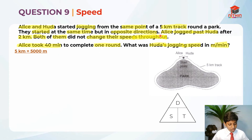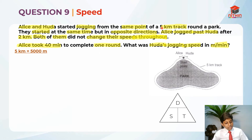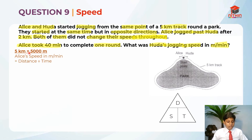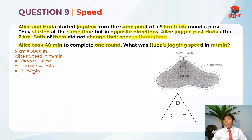Since they started at the same time but in opposite directions, we first find Alice's speed. Alice took 40 minutes for a 5km track. Speed is distance over time: 5000 meters divided by 40 minutes equals 125 meters per minute. So Alice's speed is 125 meters per minute.